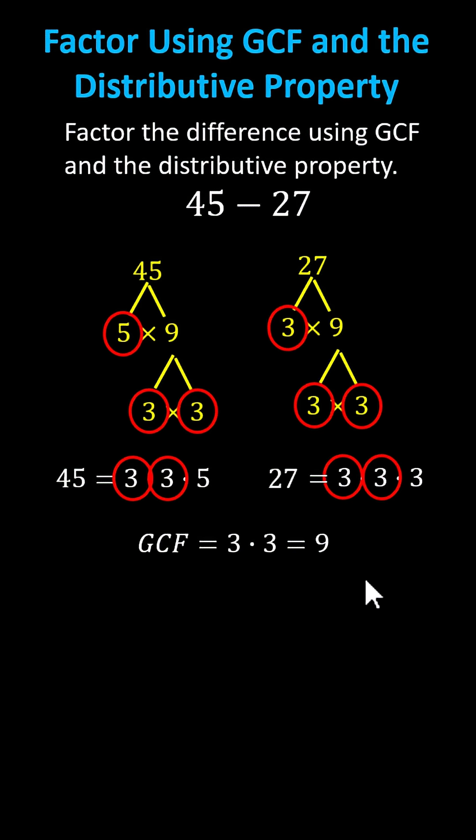And now I'll go back to the difference and write 45 and 27 as products with 9 as a factor. 45 is equal to 9 times 5, and 27 is equal to 9 times 3.